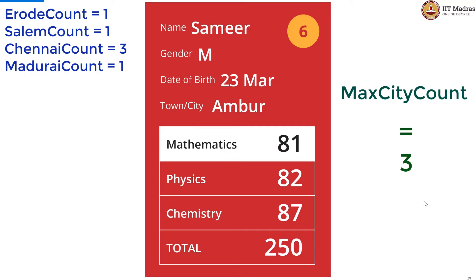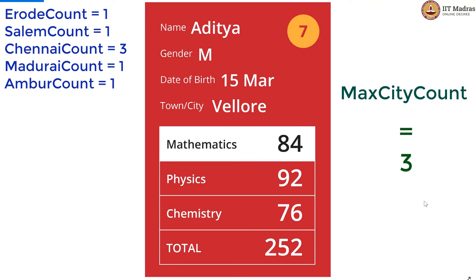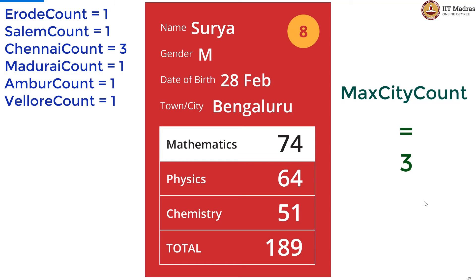Again, Ambur is new. So Ambur count is declared, initialized to 0, incremented by 1. No change in max city count because 1 is lesser than 3. Now we see Velour. Velour is new, so new variable initialized to 0, increment by 1. No change in max city count because 1 is still less than 3. Again, new city, new variable initialized to 0, increment by 1. No change in max city count.